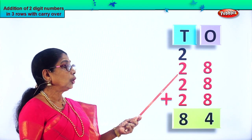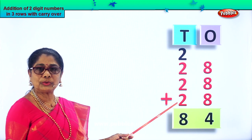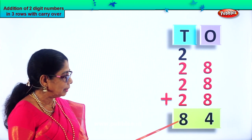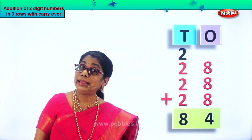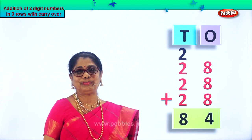Twenty-eight plus twenty-eight plus twenty-eight gives you the answer eighty-four — that is eighty plus four.